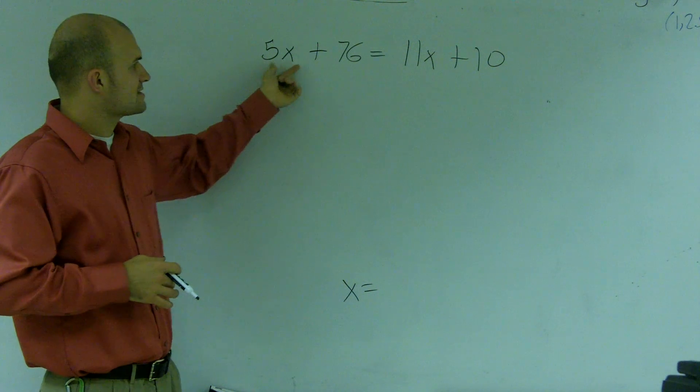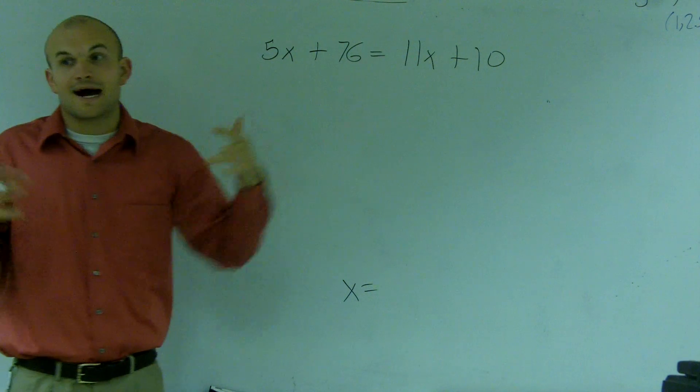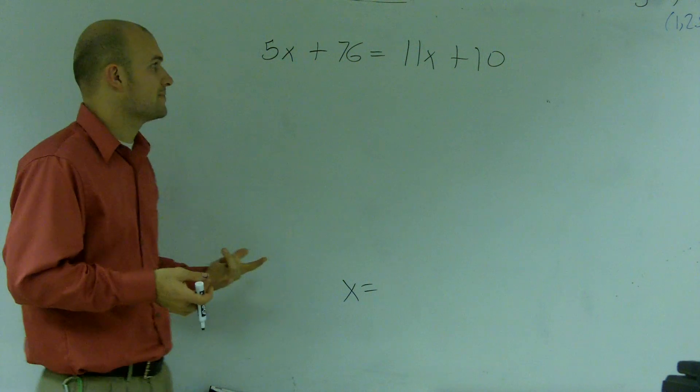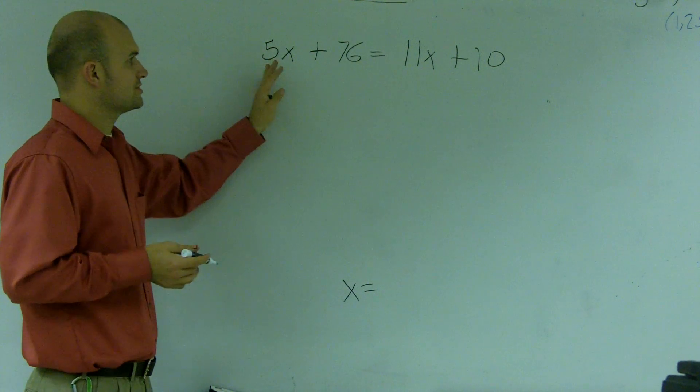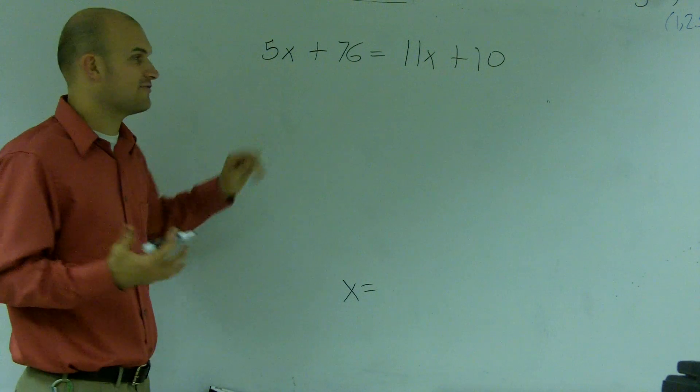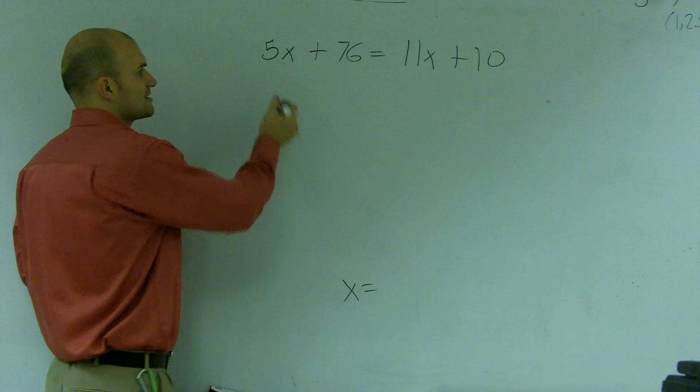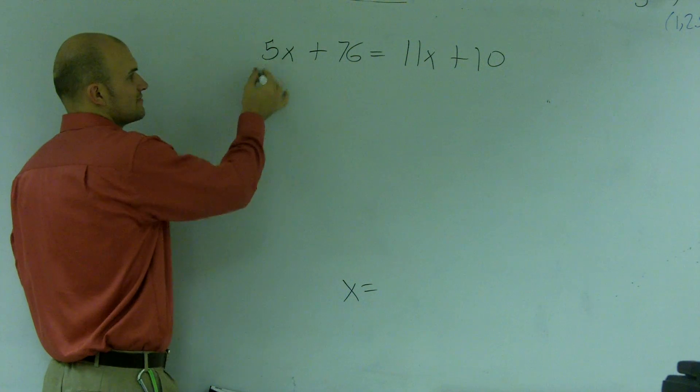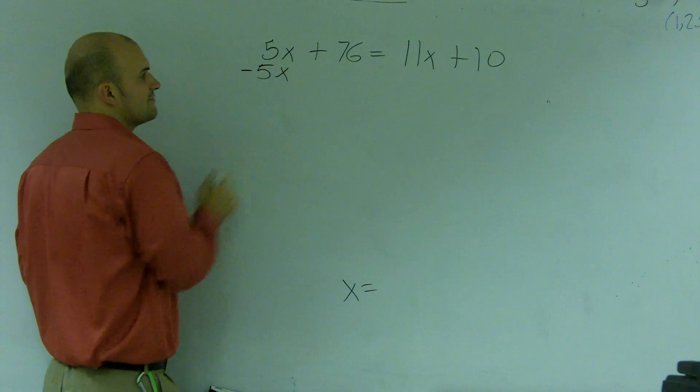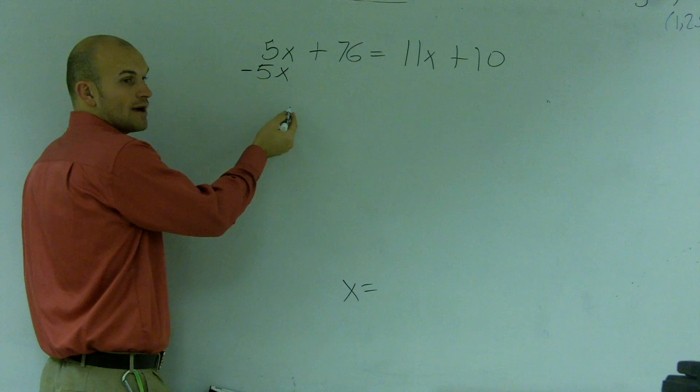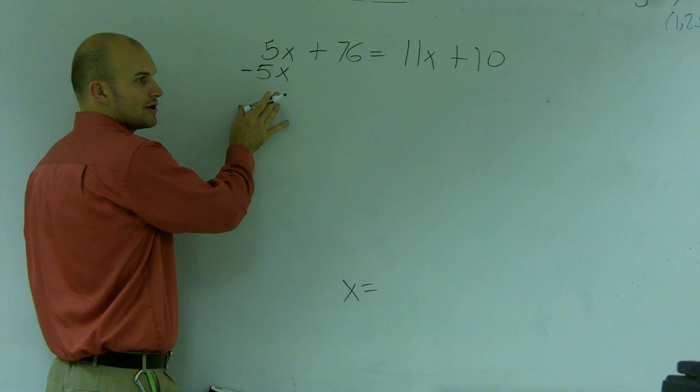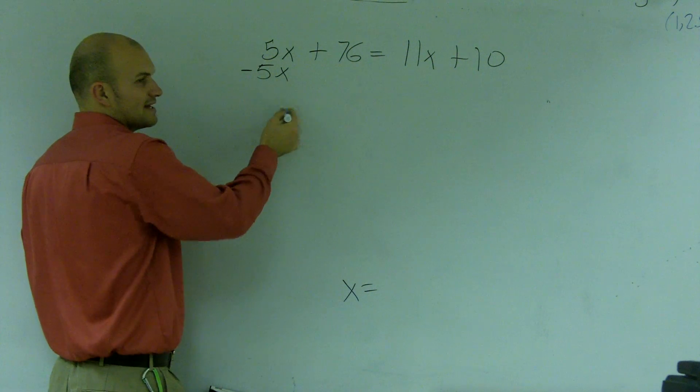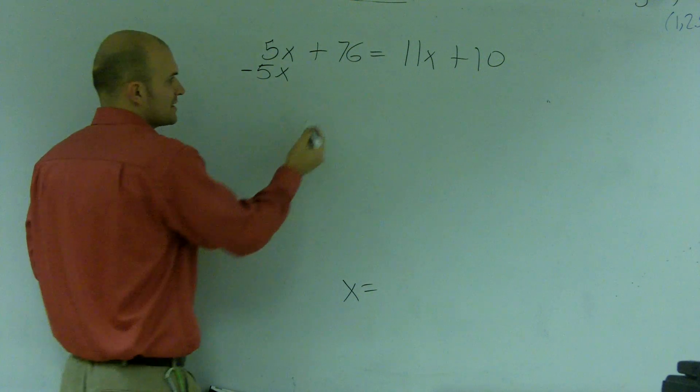So right now, you notice I have an x on the left side and an x on the right side. I need to get those x's on the same side. So what I'm going to do is get rid of our 5x. Well, how am I going to get rid of the 5x? Since this is a positive 5x, if I subtract the 5x, I'll be left with 0x. 0 times x is 0. 0 plus 76 is going to equal 76.